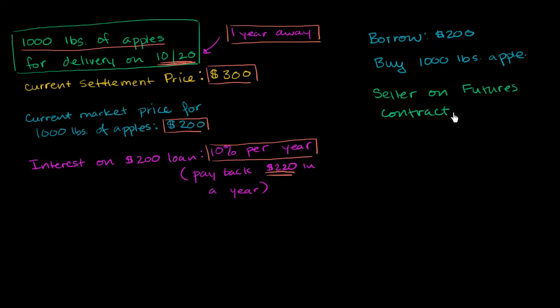So essentially, we are agreeing to sell 1,000 pounds of apples on October 20th, a year from now, for $300.